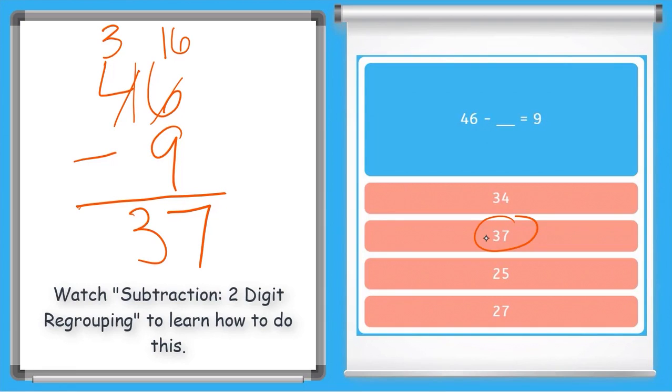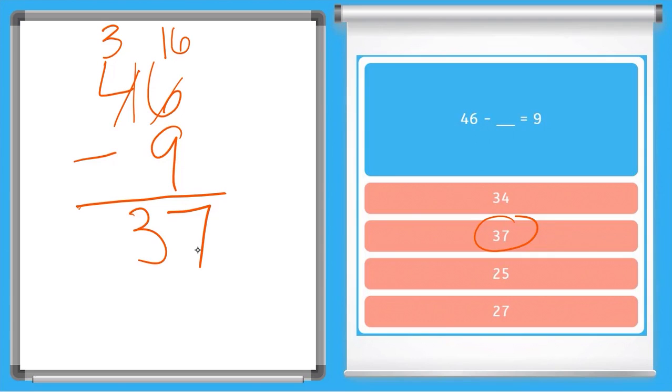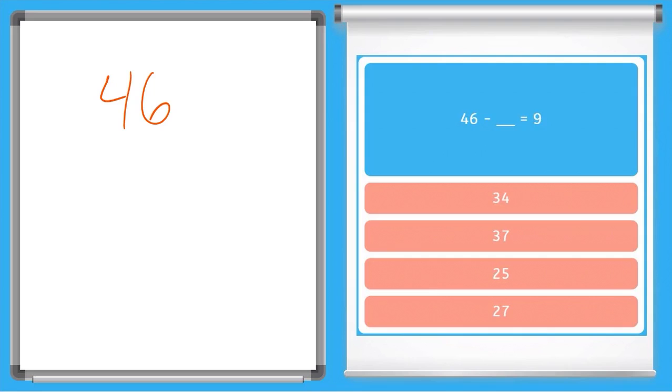Now if we wanted, we could go back and check our work by plugging in this 37 into the problem. So let's try that. So plugging it in, I have 46 and I'm going to subtract 37 and see if we get 9.